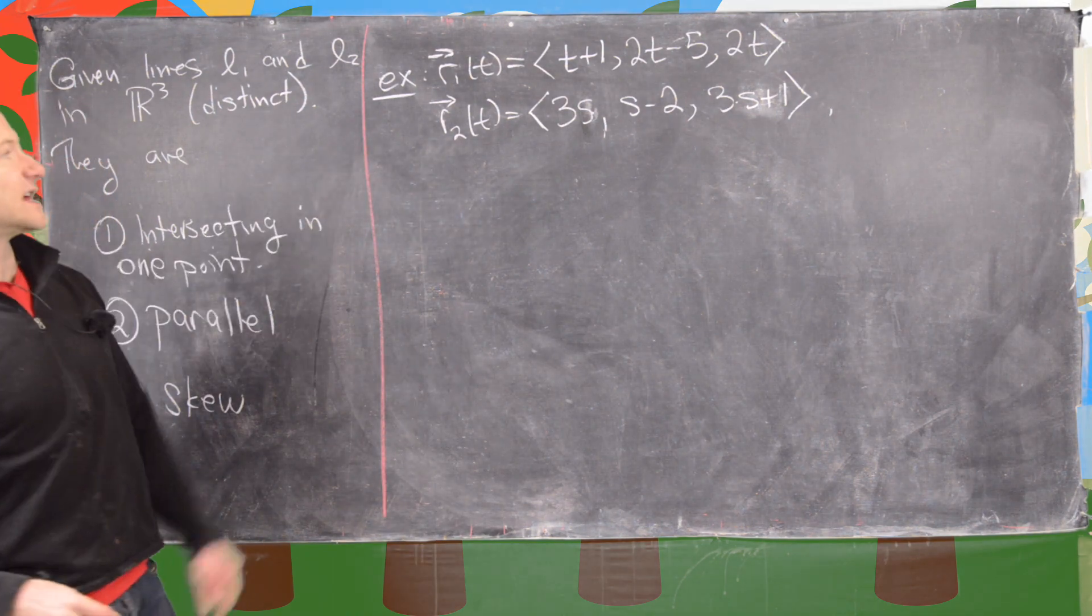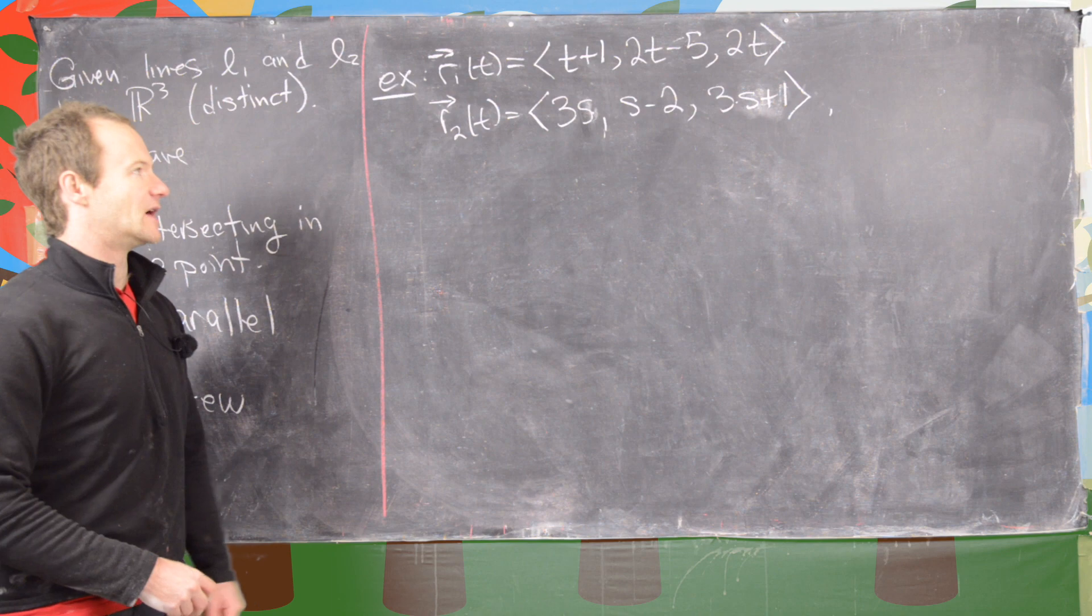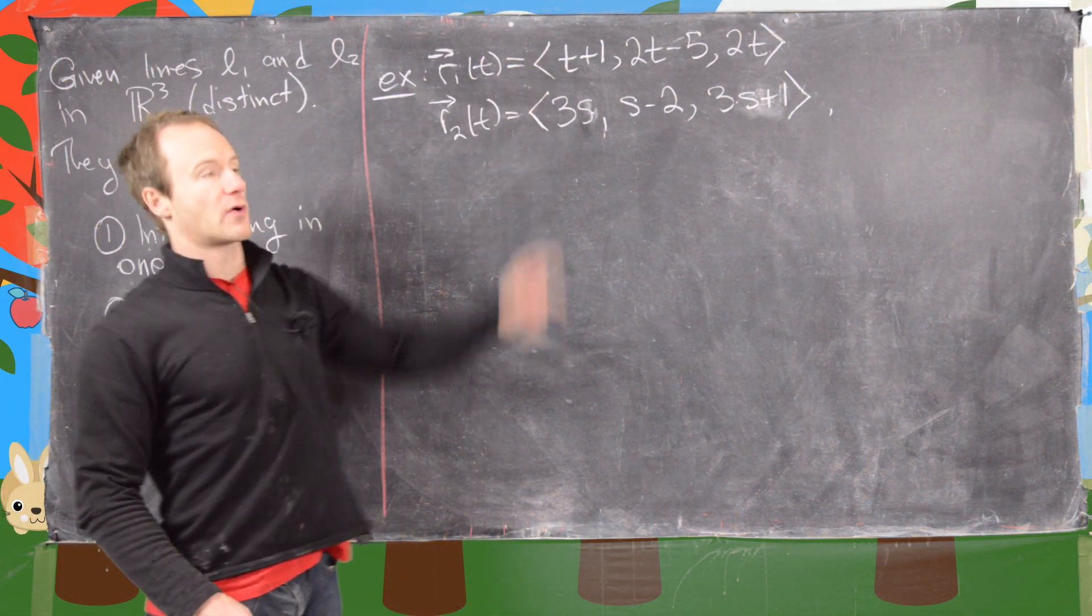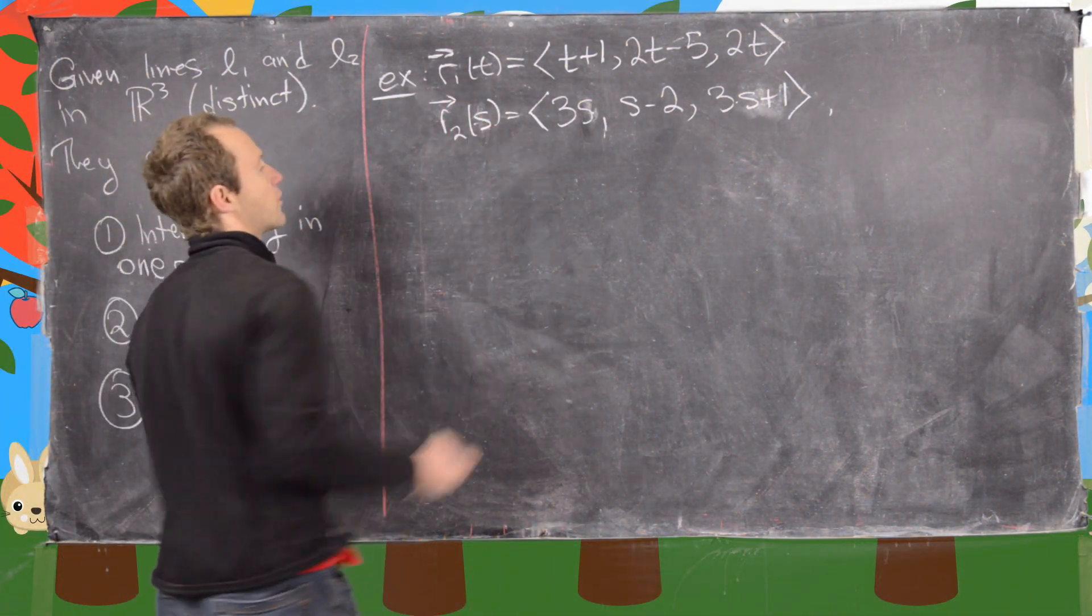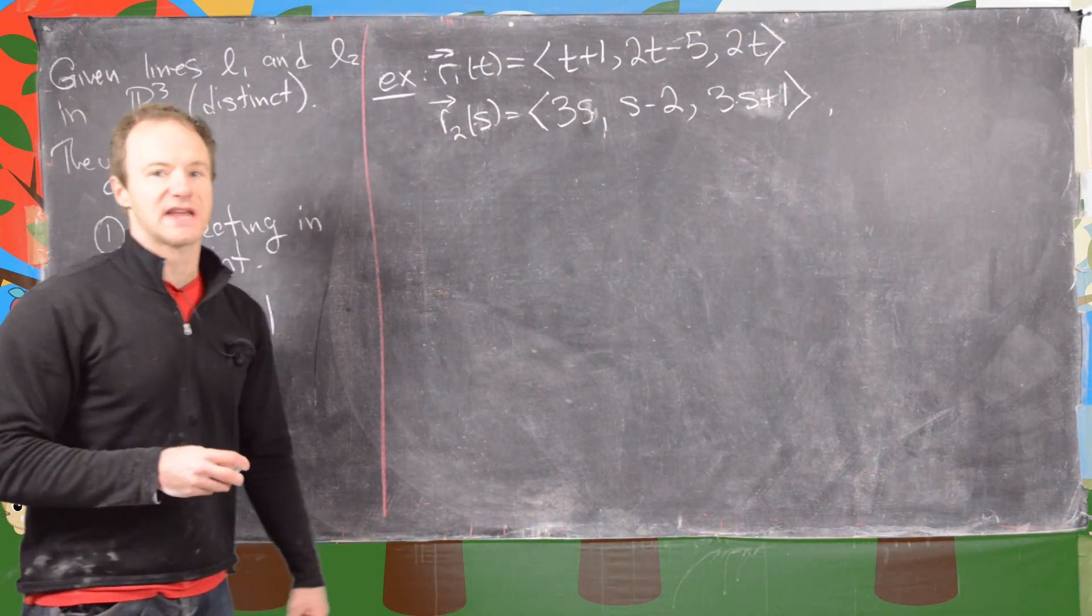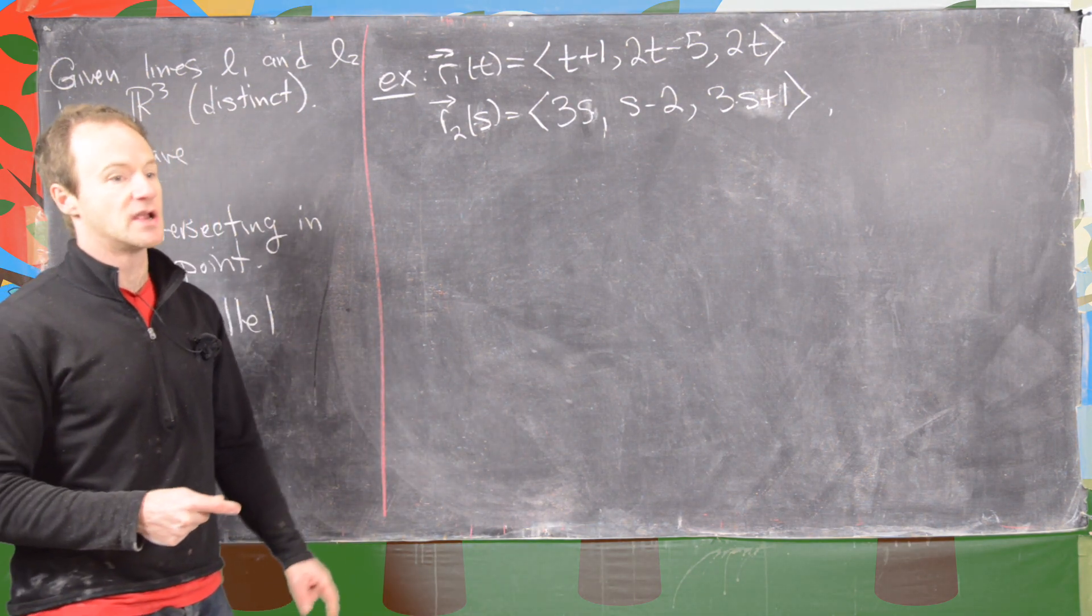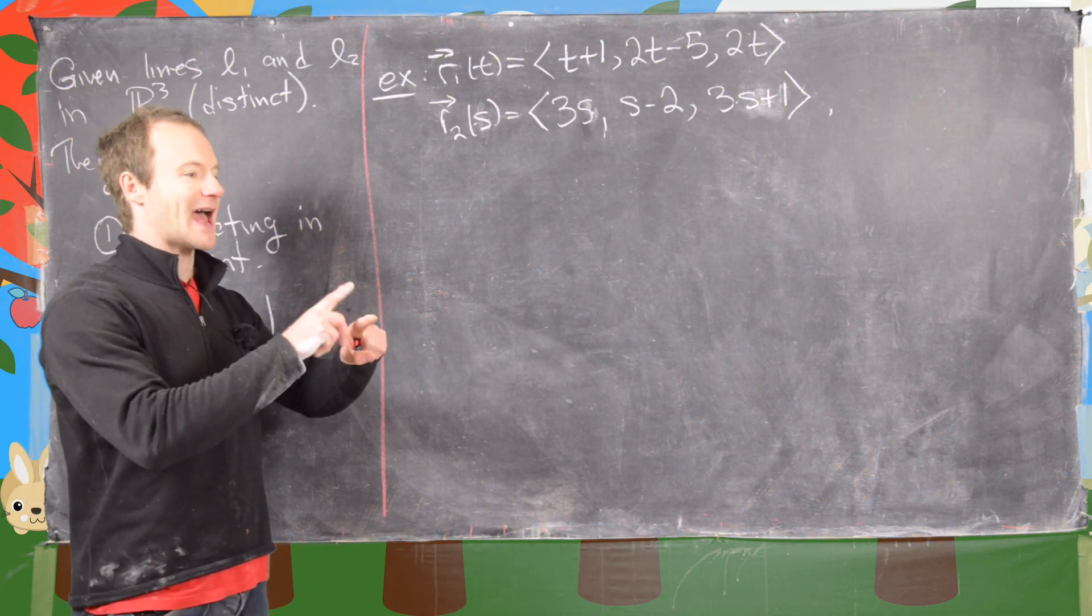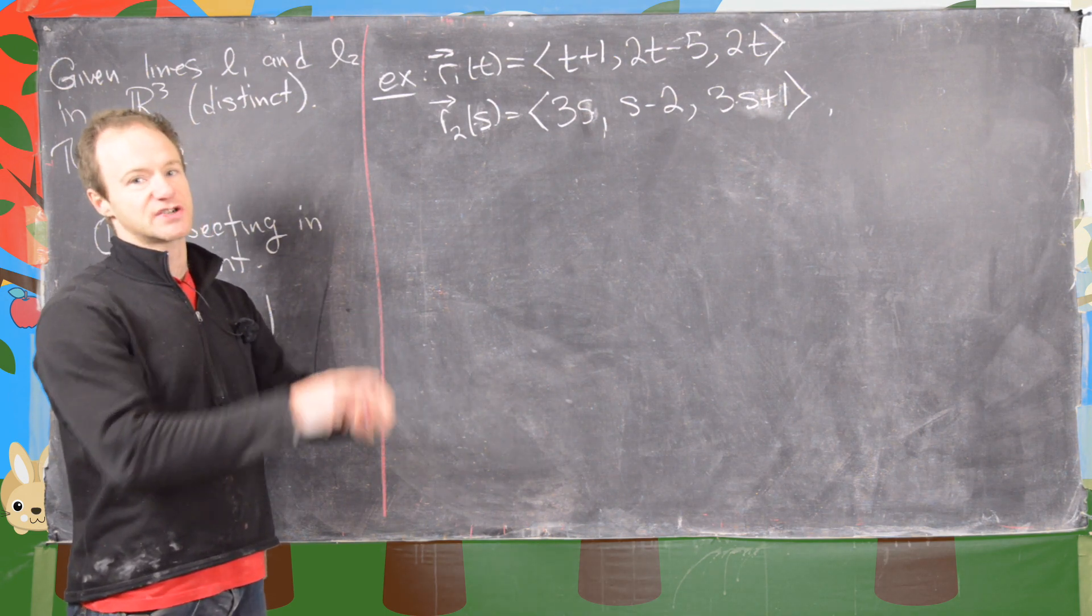Let's look at this first example where we have R1 defining the line L1 and R2 defining the line L2. Notice R1 has this vector equation with a parameter of T, and then R2 uses a parameter of S. That's really important because you don't want to use the same parameter here, as that would impose the restriction that they have to intersect at the same value of the parameter instead of just intersect at all.